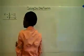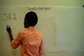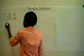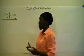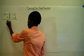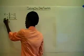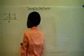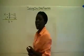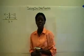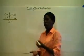Once we add, we notice that negative 2 plus 2 is going to be 0, so x plus 0 is just x. We bring down our x and then we evaluate the right side: 10 plus 2 is equal to 12.